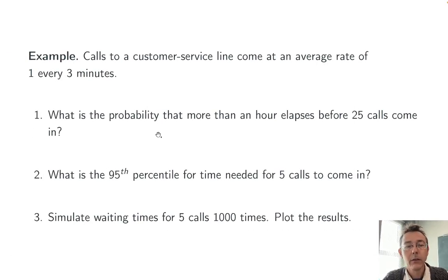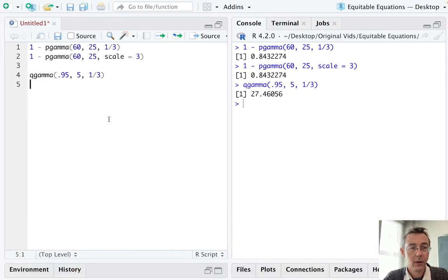Problem 3. Simulate waiting times for 5 calls a thousand times and then plot the results. Okay, notice that alpha here is again 5, just as it was in part 2. So we're going to be using the same gamma distribution that we were using in part 2. And so when we plot the results, the value that we got from part 2, 27.46, should be noticeable on our graph.